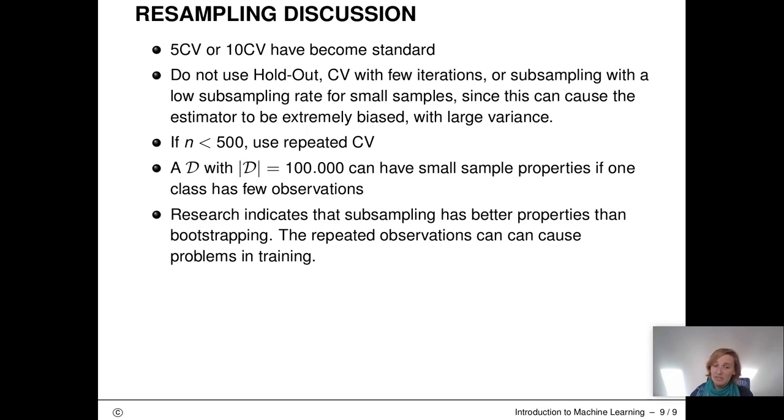Be careful, however, as this rule of thumb does not work if you have strange datasets. A dataset that has many rows, for example, can have small sample properties. If, let's say, you only have 100 observations from a certain class, then you might still also want to do repeated cross-validation.